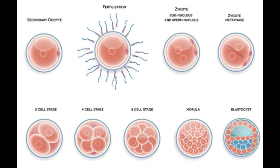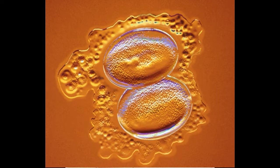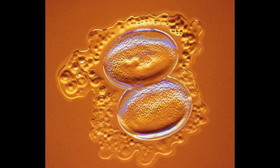Occasionally, the initial cells of the zygote, called stem cells, will divide into two clusters. When that happens — one egg dividing into two — that is when we have identical twins.